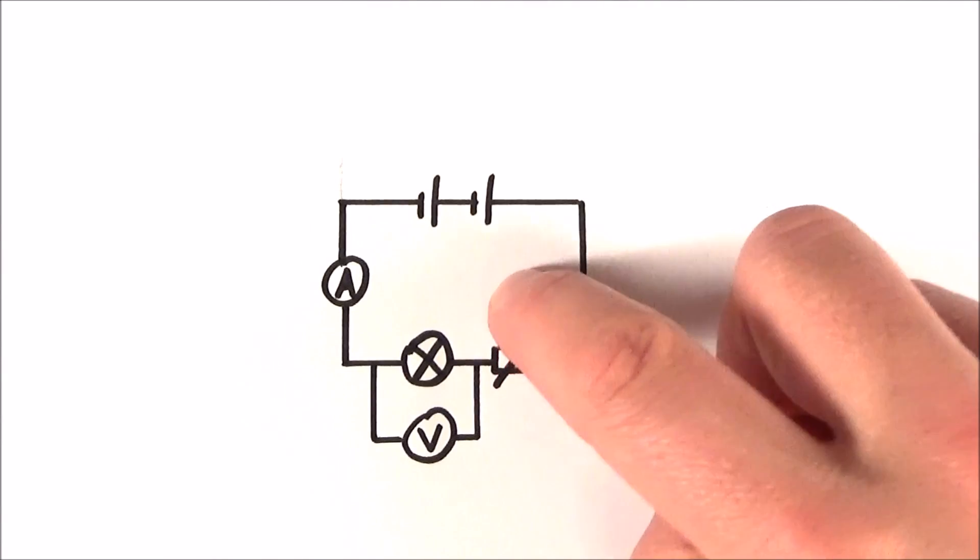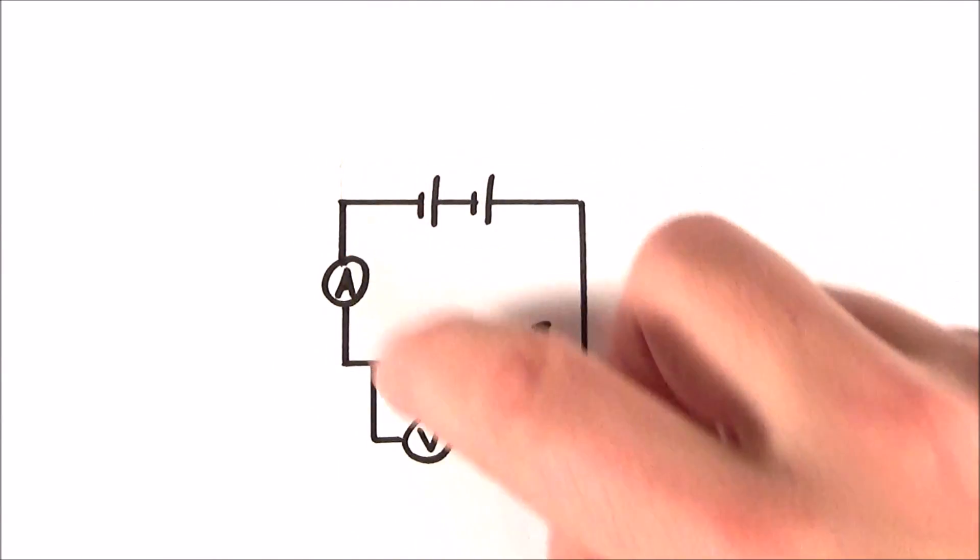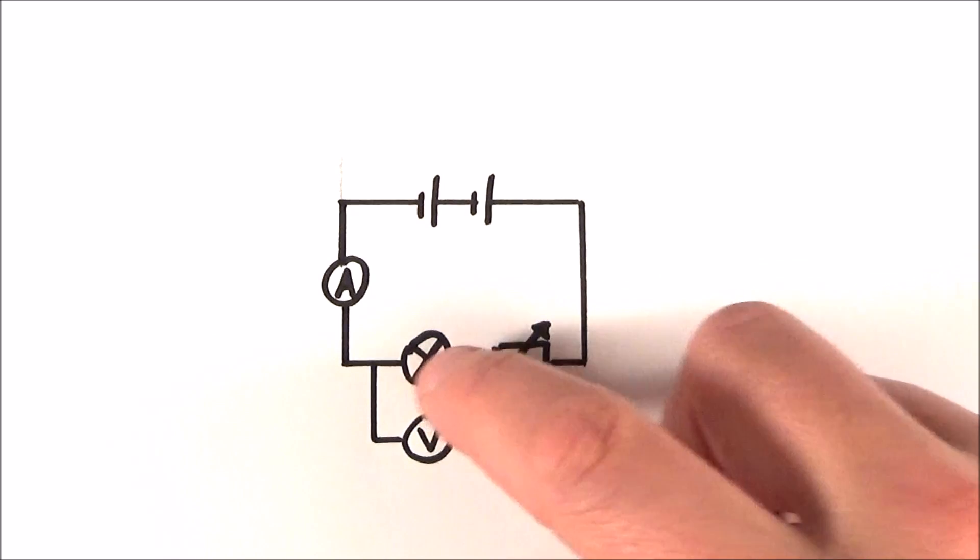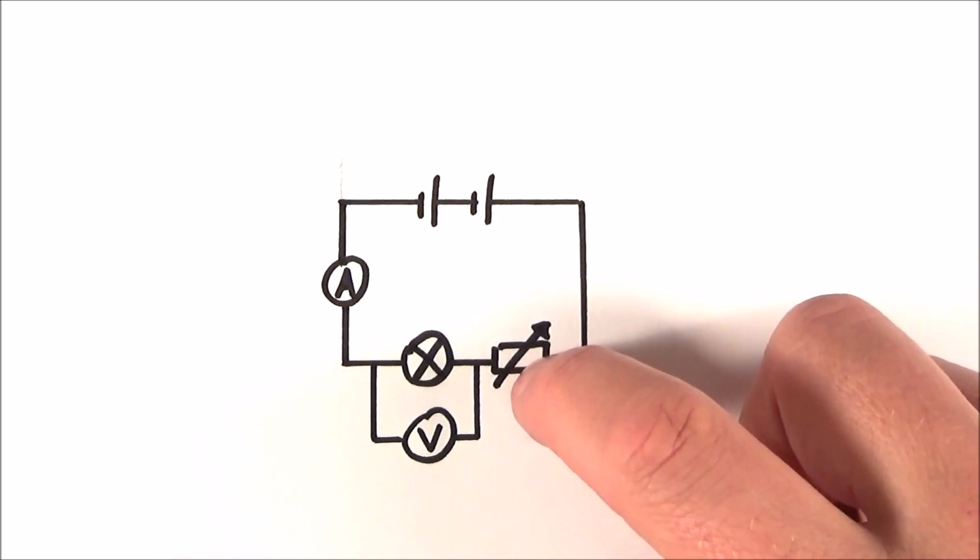What I have here is a very simple circuit diagram with a battery, an ammeter, a voltmeter, and a lamp connected in series to a variable resistor.